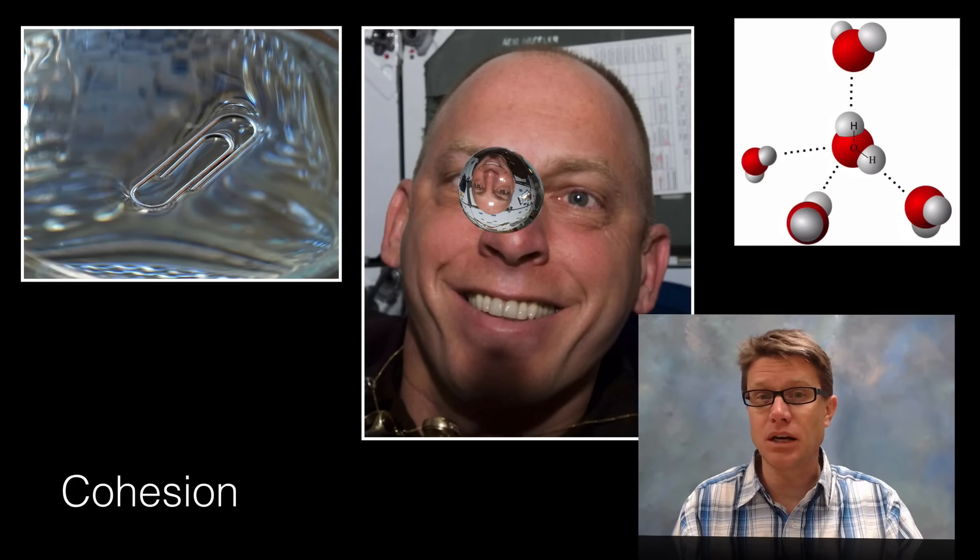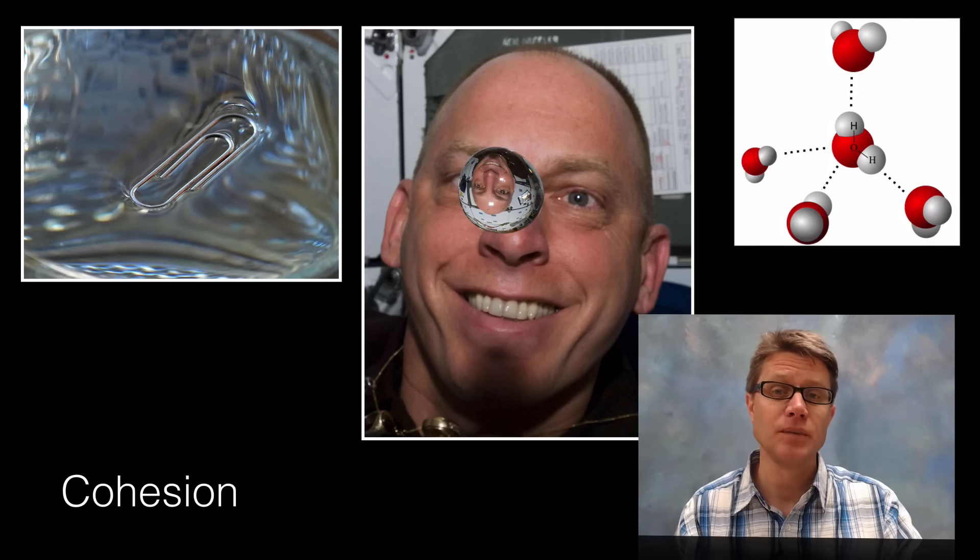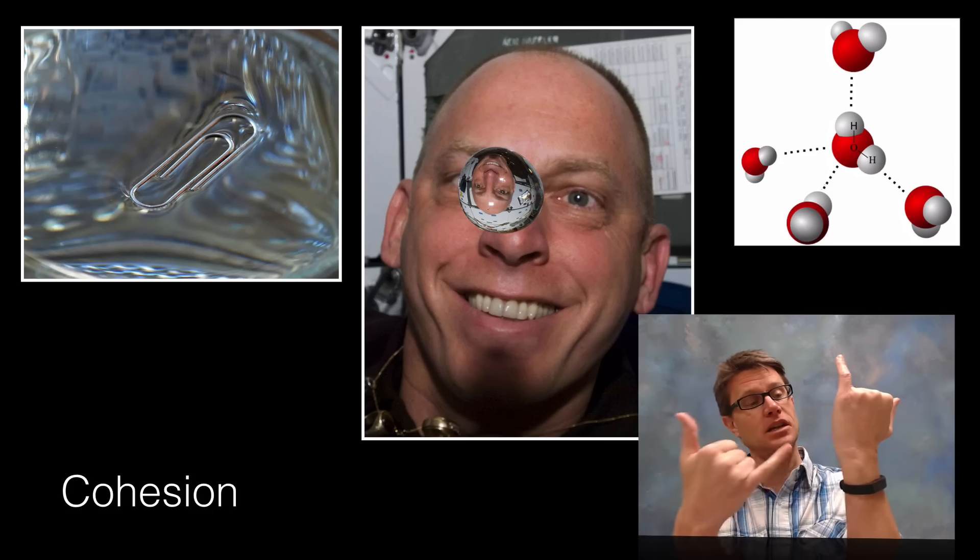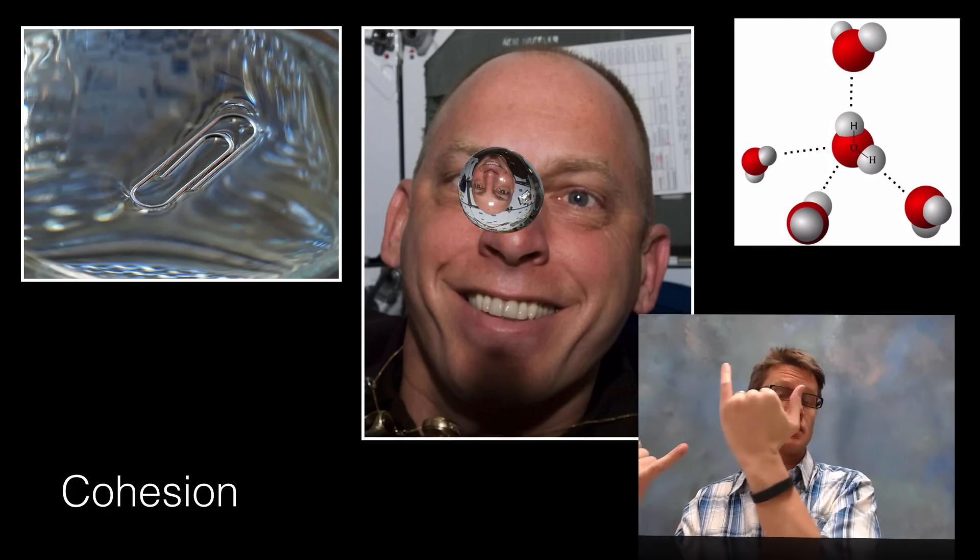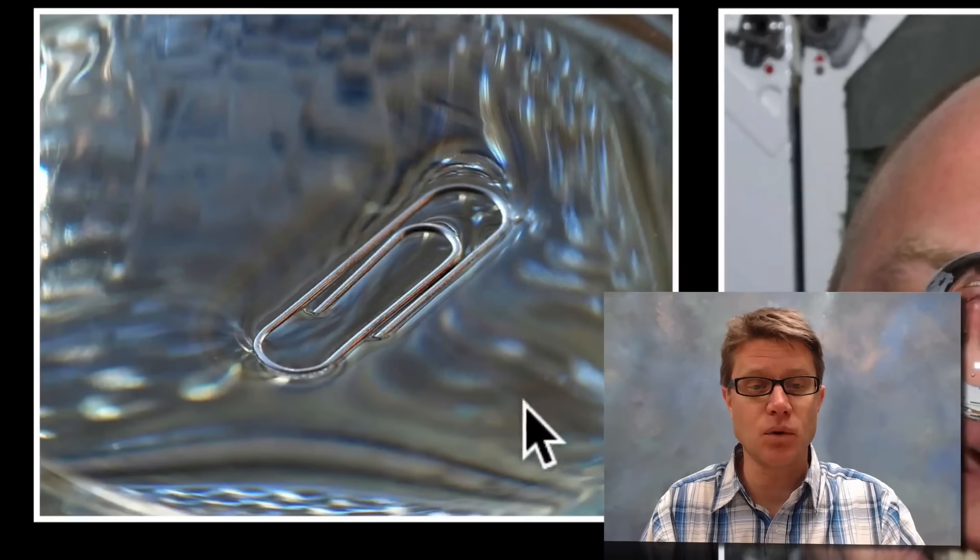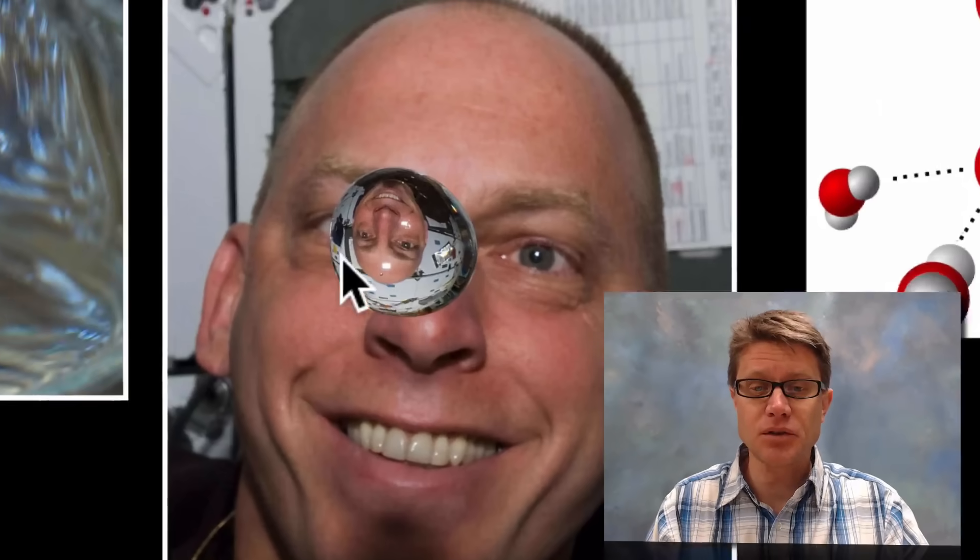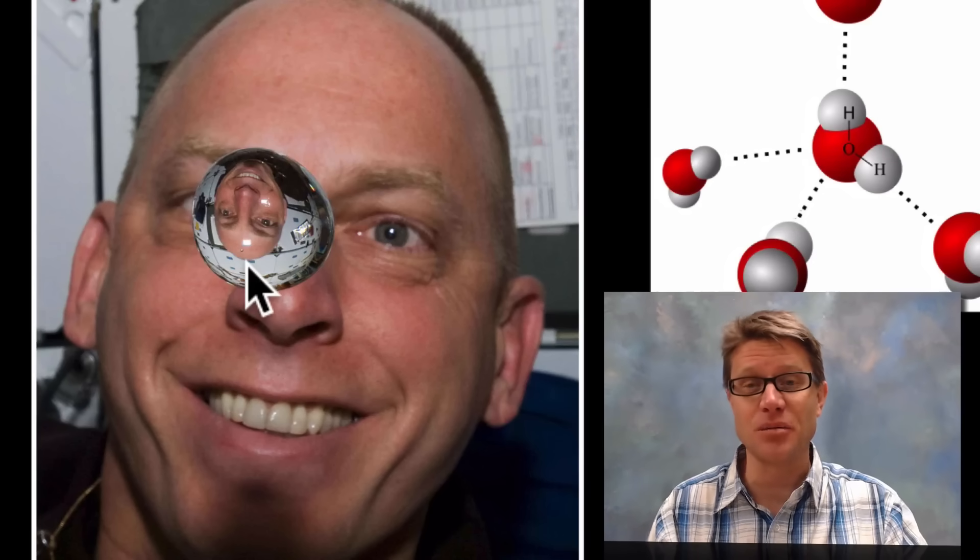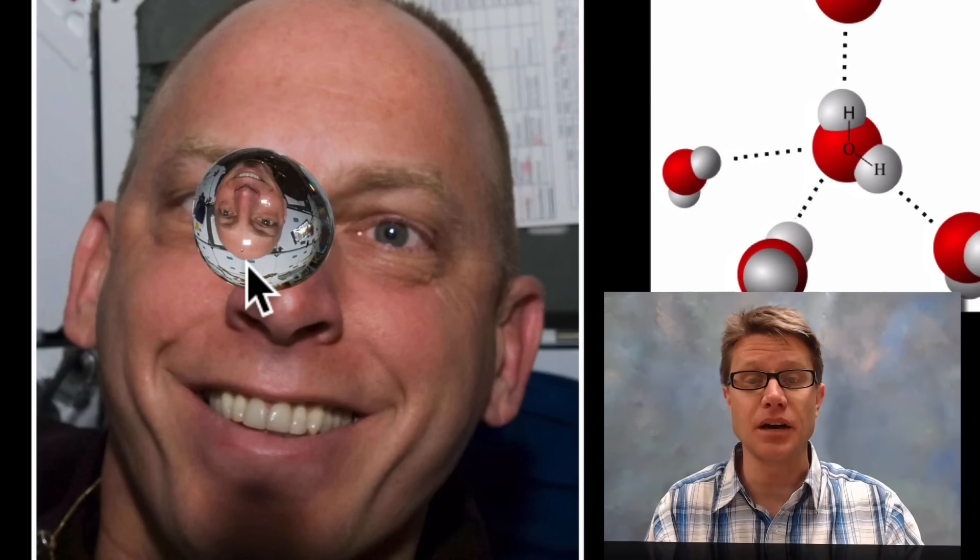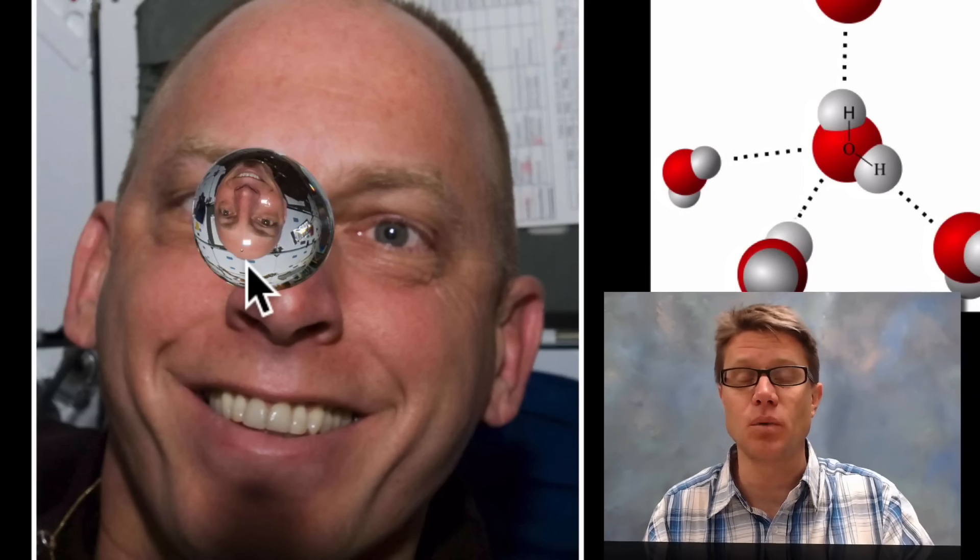Now what are some of the properties that we get as a result of this polarity? The biggest one that you can see right away is cohesion. If you think of this as one water molecule and this as another water molecule, then the positive here is attracted to the negative here. If I pull this in this direction, this is going to go with it. It's holding all of those water molecules together. The surface tension in this water right here is caused by all the hydrogen bonds in the water molecules. In space or in orbit around our planet, this is a big globule of water just floating there. What's holding it together is going to be the cohesion or the hydrogen bonds of those water molecules.